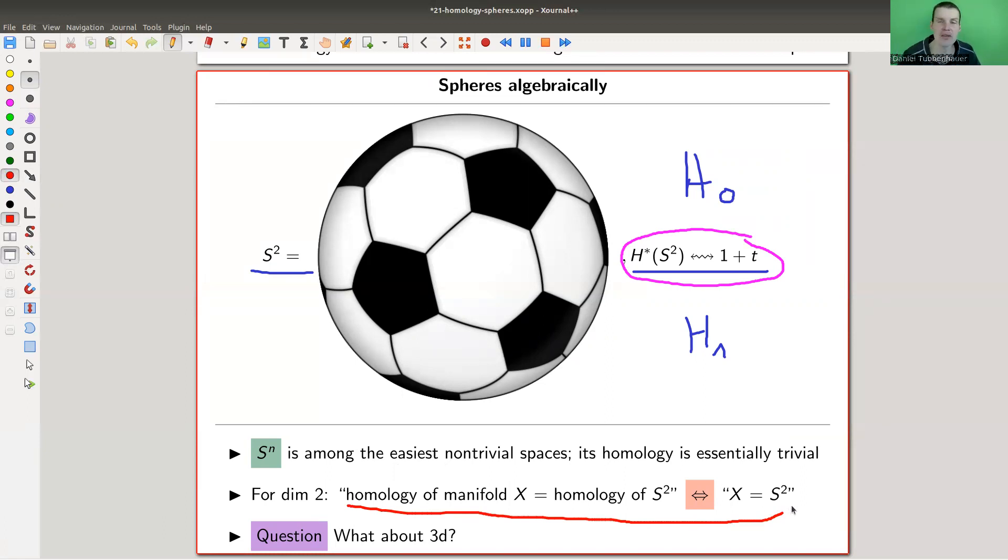So the algebraic definition - when I say again what the algebraic definition is - I just define a space to be a sphere if it has the homology of the sphere, homology spheres. And this actually works in two dimensions. So the only space that has the homology of the sphere is the sphere.